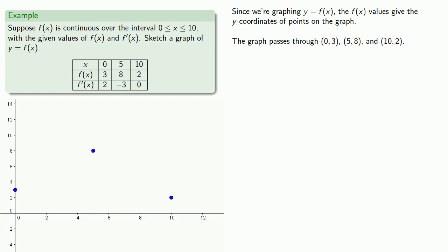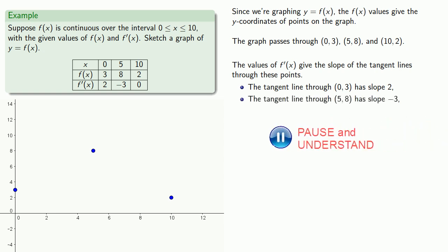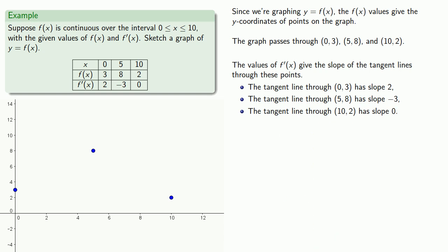Next, we know the values of f prime of x give the slope of the tangent lines through these points. Since we know the derivative at x equals 0 is 2, the tangent line through (0, 3) has slope 2. Likewise, the tangent line through (5, 8) has slope negative 3. And finally, the tangent line through (10, 2) has slope 0. So we might try to draw these tangent lines. One important thing — we don't want to draw too long a segment because that will clutter up our graph. The tangent line is an approximation to the curve as long as we don't go too far from the point of tangency, so we'll draw short segments of these tangent lines.